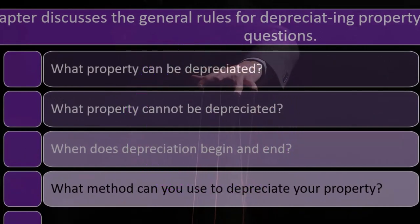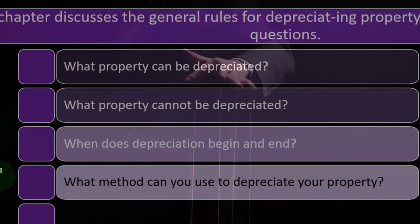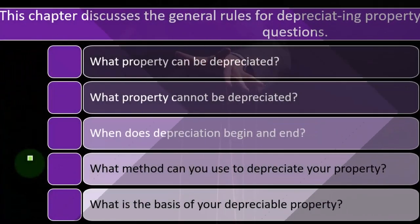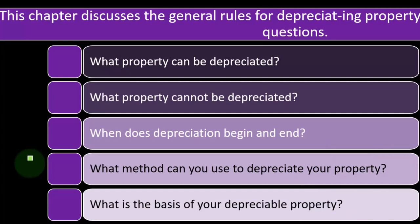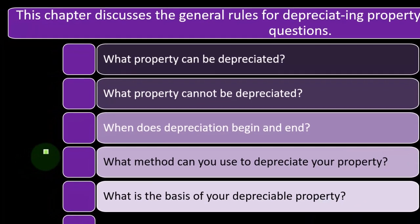What method can you use to depreciate your property, and which method do you have to use? We have to be in accordance with the tax code. We're not using generally accepted accounting principles. We're not trying to use the method that most accurately allocates our property under accrual accounting for decision-making purposes — we're trying to maximize our tax benefits here.